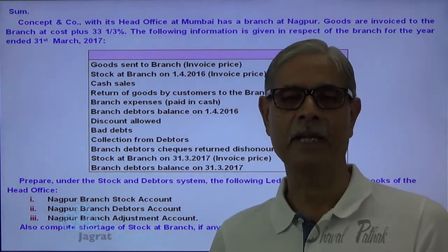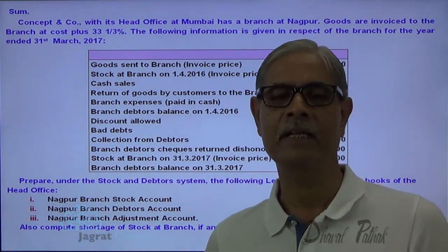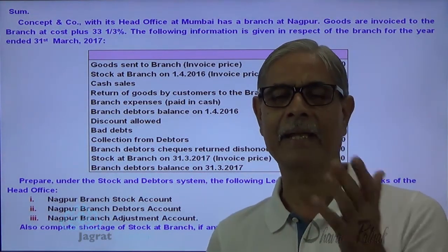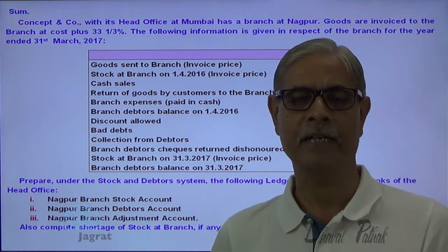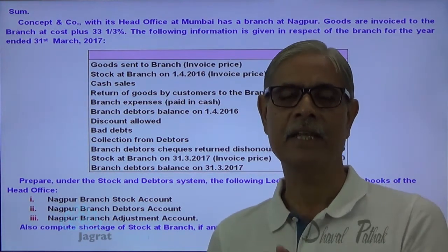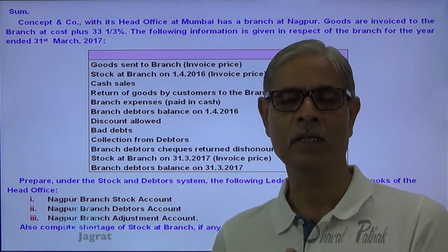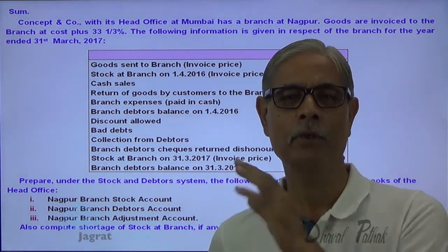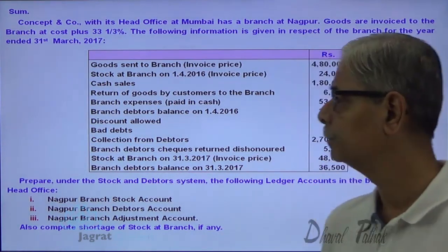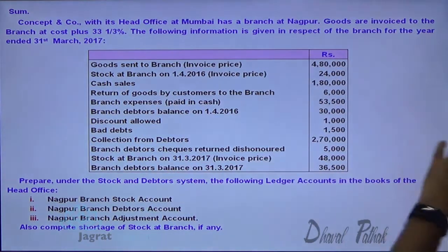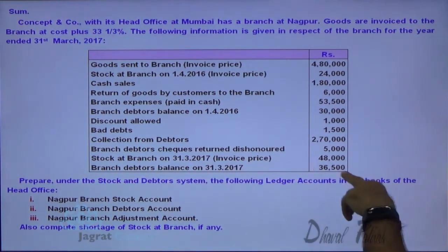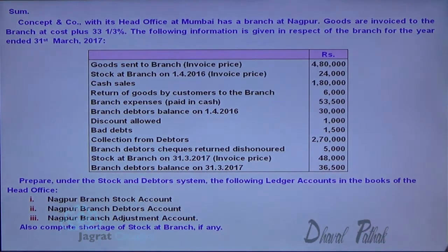When we receive a cheque from debtors, the entry is: bank account debit to debtors account credit. When these cheques are dishonored, you write the reverse entry: debtors account debit to bank account credit. Stock at branch invoice price is 48,000. Balance of branch debtors as on 31st March 2017 is 36,500.